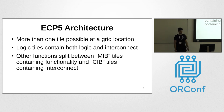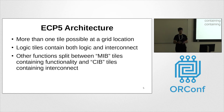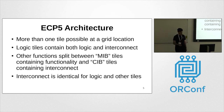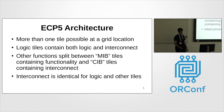One thing that caught me out is that you can actually have more than one tile at a grid location. Logic tiles are a single tile containing both logic and interconnect. For other functions like block RAM, they're split into multiple tiles: MIB tiles containing the functionality, and CIB tiles for interconnect. A very nice find during fuzzing is that interconnect bits are identical for logic tiles and all other tiles, so once you fuzz one, all the others come for free.